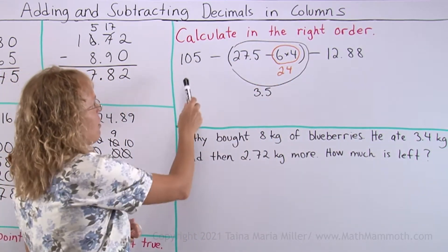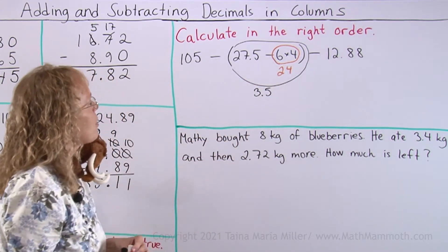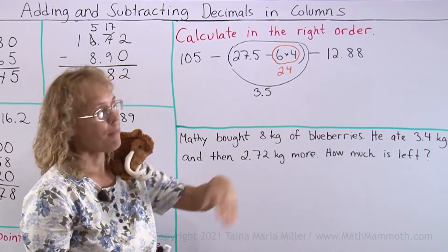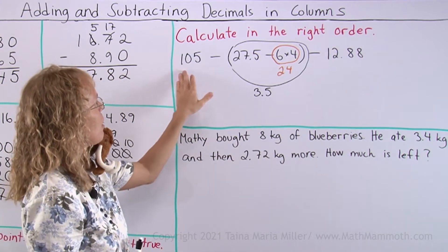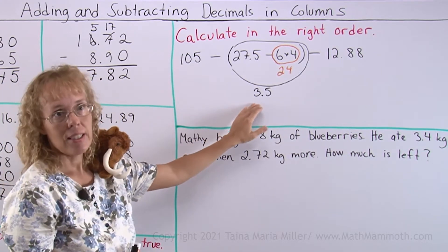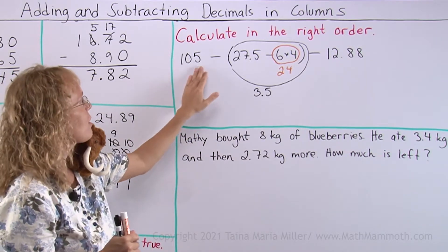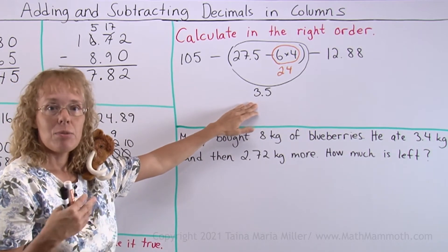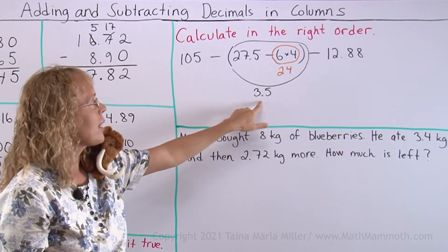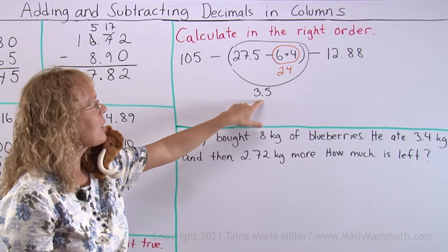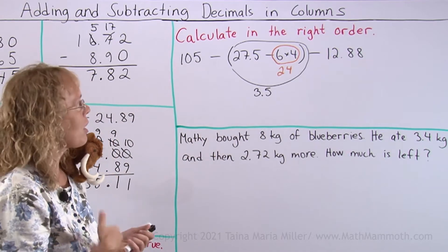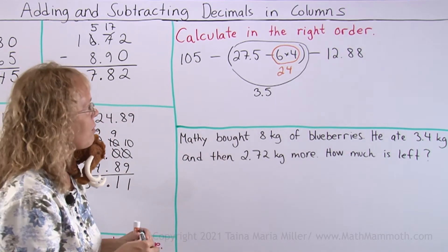And so now I have two subtractions to do, from 105 take away this and take away that. 105 take away 3.5, I can do that in parts pretty easily too, because 105 minus 3 is 102. 102 then take away half, 0.5 would be half. 102 take away half is 101.5.